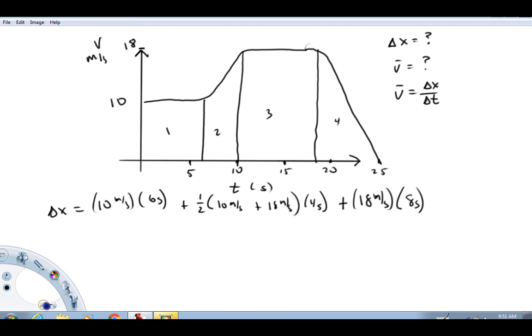Last one. This area is a triangle. Area of a triangle is one half the base. Let's see, I said that was—what did I say that was? I said that was three, so that's about two and five more. So I'm going to say that's about seven. So one half times seven seconds times the height, 18 meters per second.